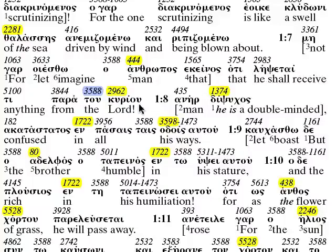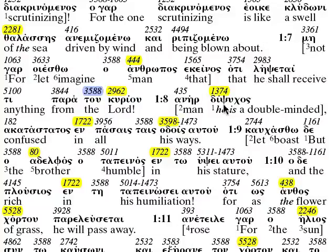1:8 — 'Anir dipsychos, akatastatos en pasais tais hodois autou.' A double-minded man — 'dipsychos': we have 'di' meaning two, dichotomy, a division of two parts, a diode, a two-terminal conductor, and 'psychos' is the psyche — minded, double-minded, two-minded — confused in all his 'hodois,' his ways, the 'hodos' — cathode, the derivative of the electron current.